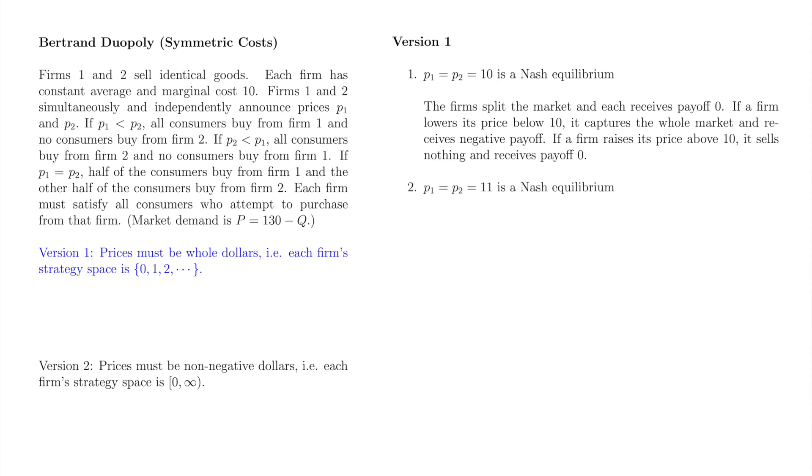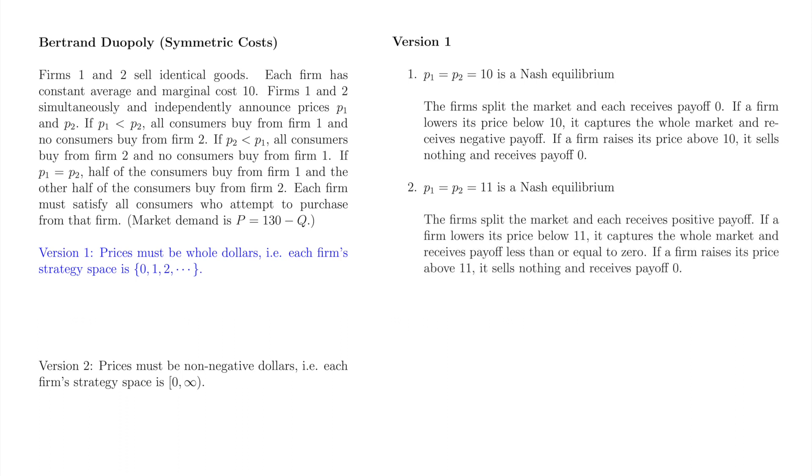The fact that prices are in whole dollars means there is another pure strategy Nash equilibrium, in which each firm chooses price equal to 11. The firms now split a small positive profit. Neither firm can raise its price. If a firm did so, it would have no customers and make zero profit. If a firm lowers its price to 10, it will capture the whole market, but make zero profit nevertheless because its price and constant marginal cost are equal. If a firm lowers its price below 10, it will lose money.